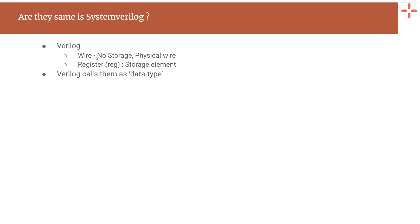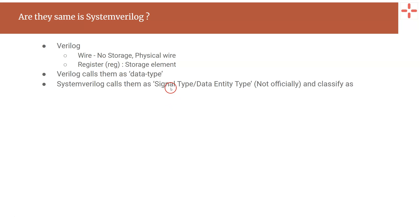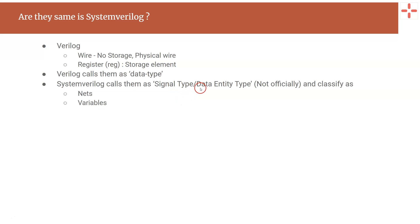Now coming to SystemVerilog, SystemVerilog doesn't call these two categories as a data type, but instead calls them something else. In SystemVerilog, these two categories are called a signal type or a data entity type. Note that these are not official names — they are classified as either a net or a variable. These are called data objects in the LRM.